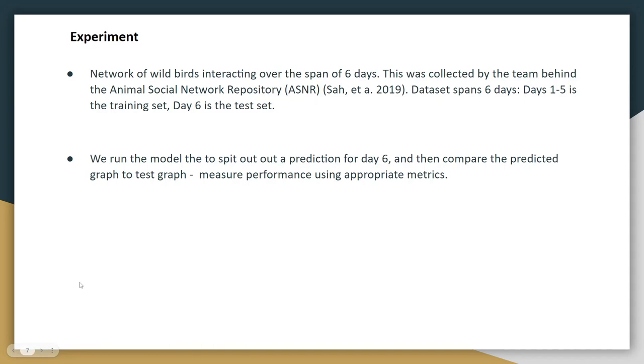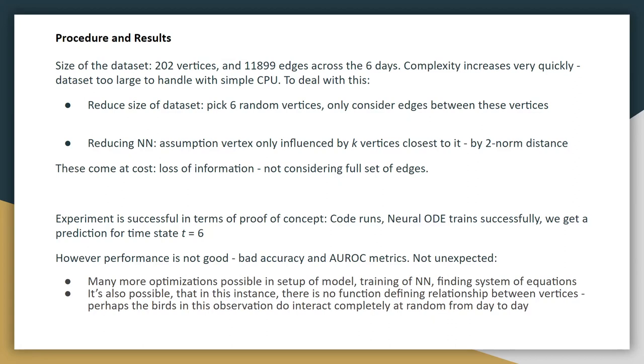Now we want to do an experiment. We can compare this predicted graph to test graph and see how we did, which is what we tried to do. We used a network of wild birds tracking over the span of six days, and so we used days one through five as training set, and day six as the test set. And so we tried to get a prediction for day six, and we compared the predicted graph to the actual graph of day six. Now, the size of the dataset, 202 vertices, almost 12,000 edges across those six days. The complexity increases very quickly, and the dataset is too large to handle with the simple CPU that we were using.